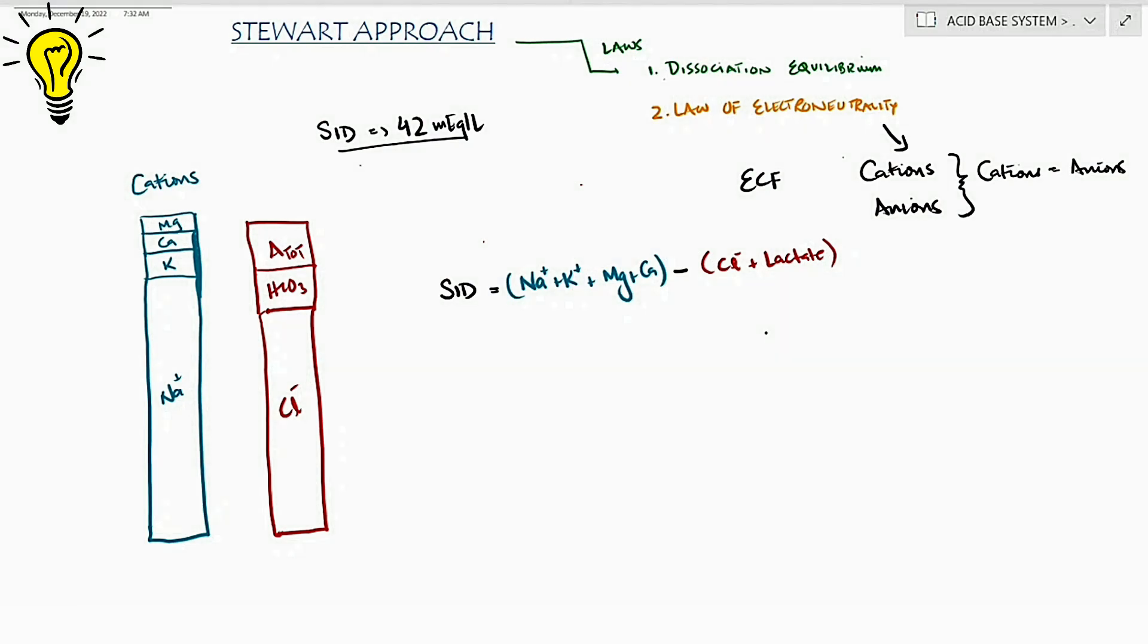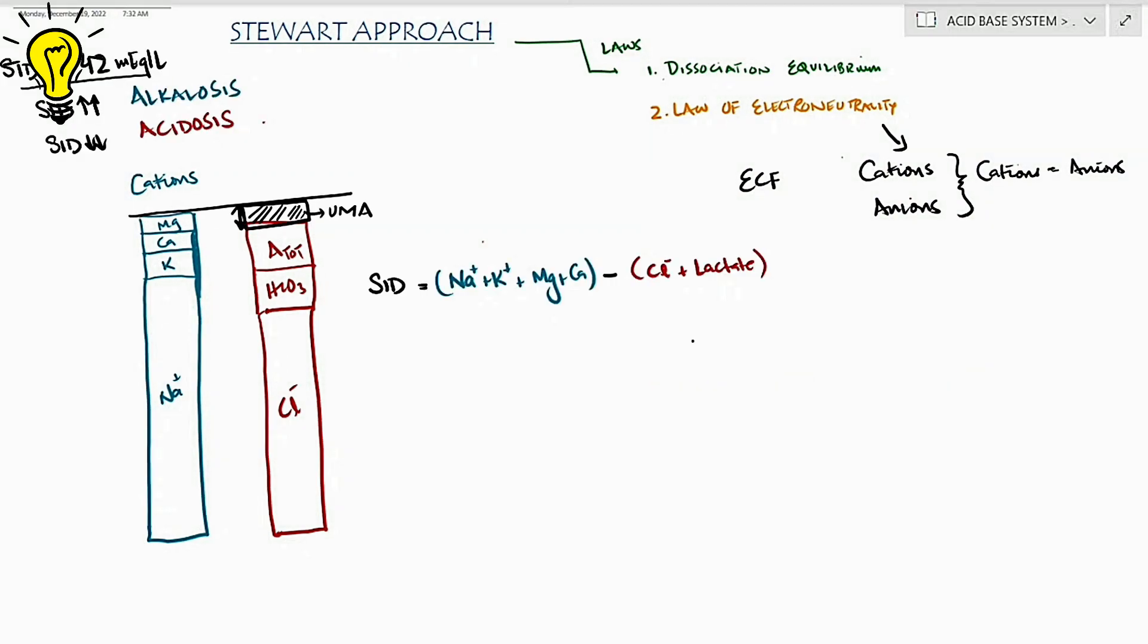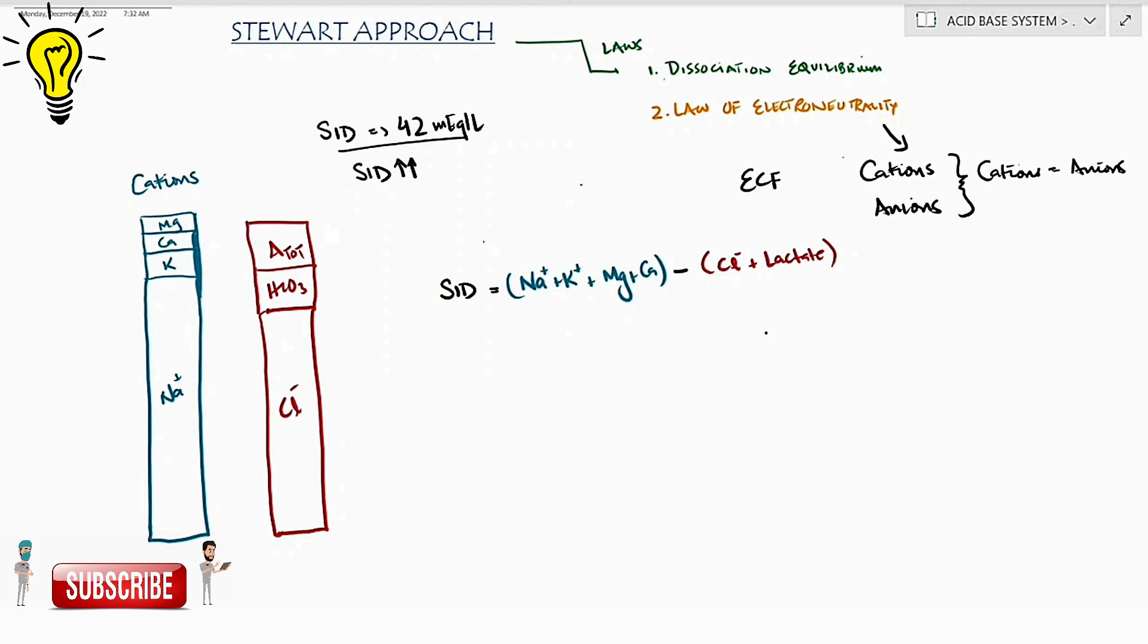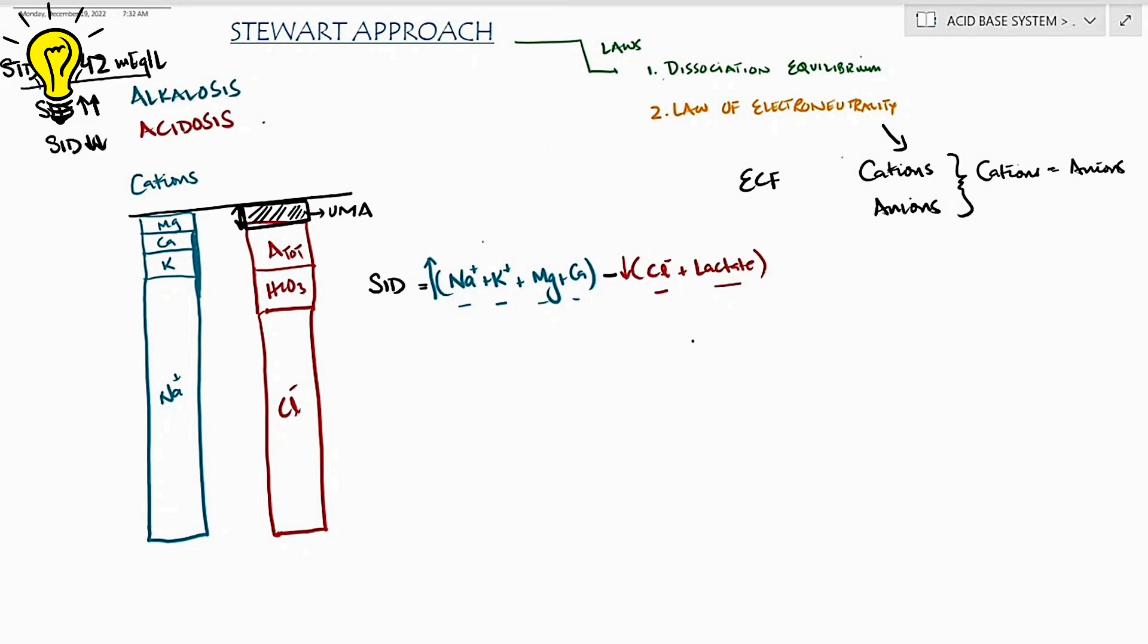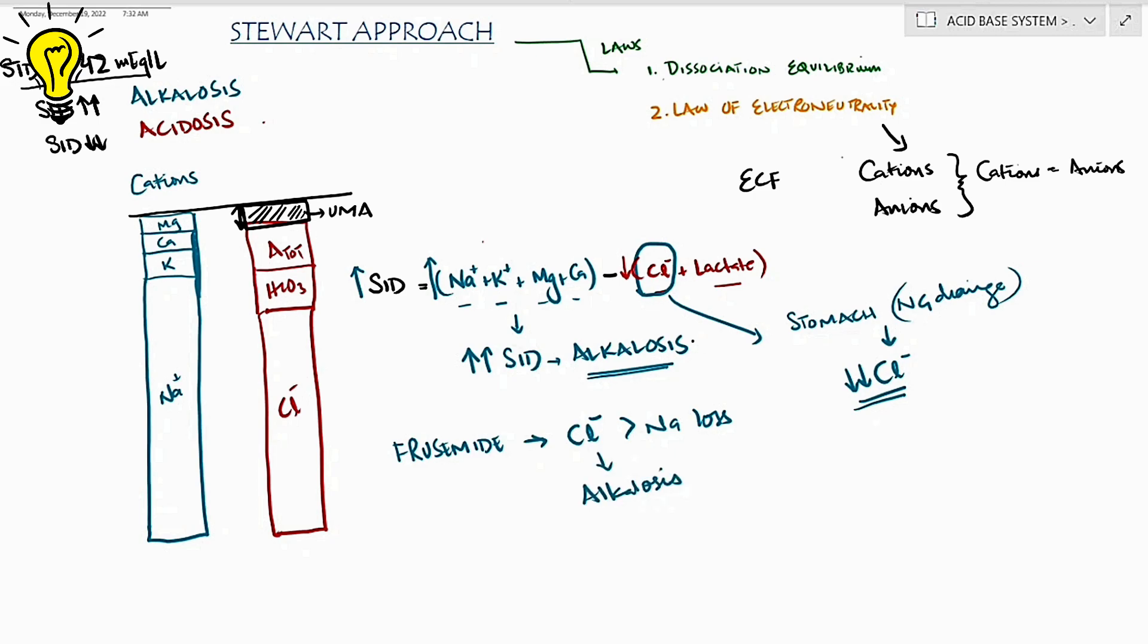We said cations are basic in nature like sodium and anions like chloride are acidic. If you increase the cations in body, the strong ion difference will increase as per this equation. Now this would cause alkalosis. So as per this concept, if we lose the chloride in NG tube drainage, this will increase the strong ion difference and cause alkalosis. So it isn't the hydrogen ion loss from NG tube that causes alkalosis, rather it's the chloride ion. Similarly, diuretics or furosemide causes more chloride loss in kidneys compared to the sodium loss. So strong ion difference will increase and that shows diuretics can cause alkalosis.